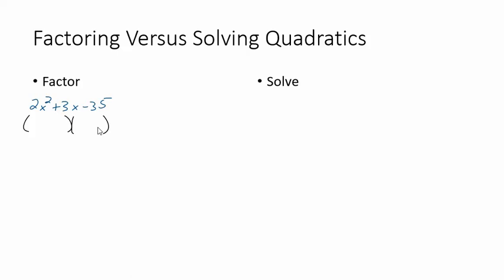Well, let's go ahead and do that. If you've watched my guess and check video, you know that's kind of my preferred method. So the first thing I would do is take 2 times 35 and that gives me negative 70, and then I'd figure out what multiplies to be negative 70 and adds to be my middle term of 3.